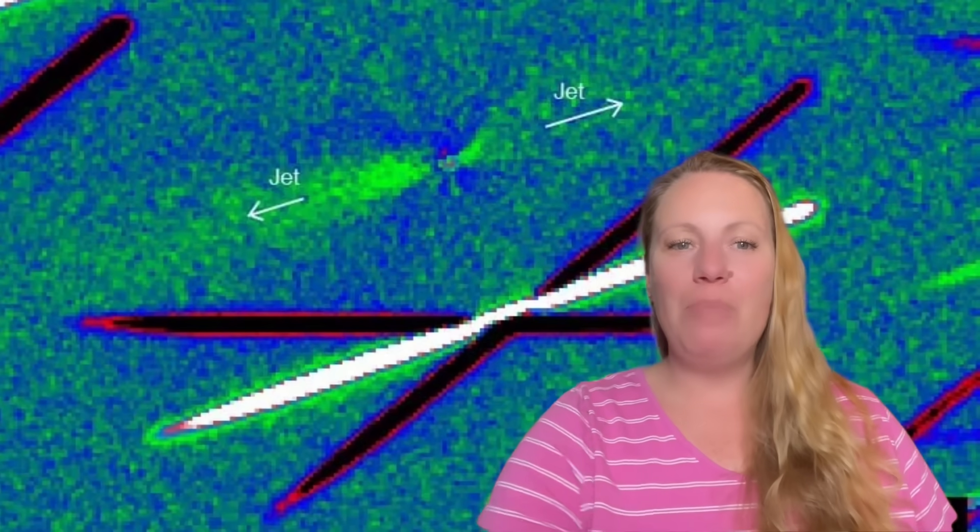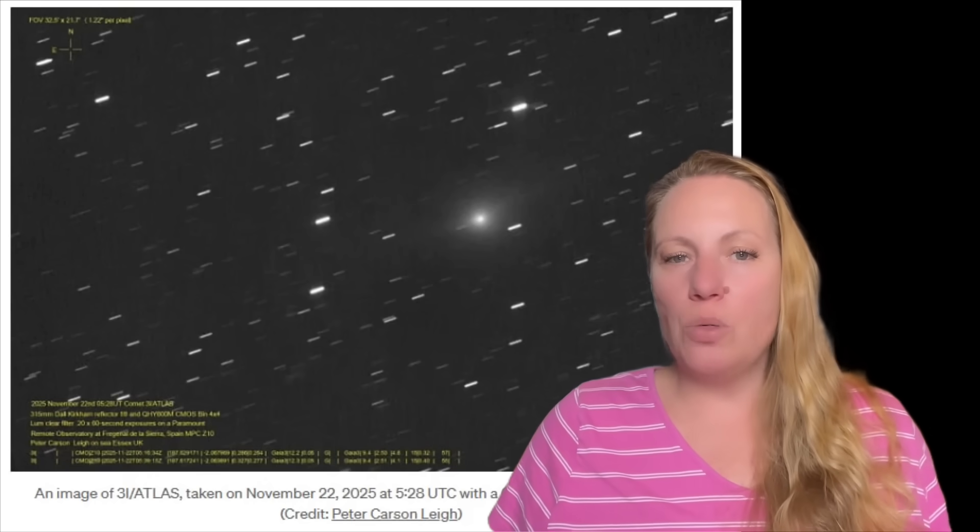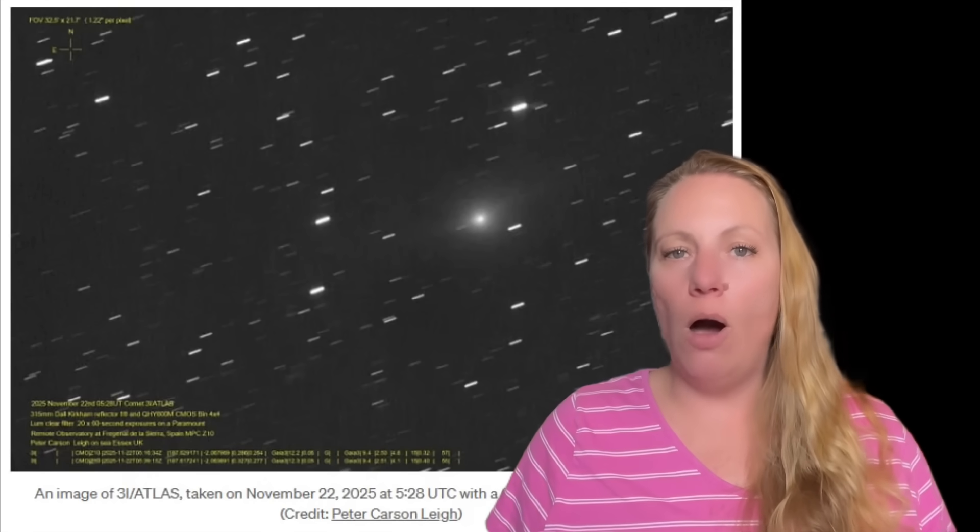Maybe other star systems create the same kinds of icy bodies that we do. And that's, again, huge. That's huge. Space breaking. Comet breaking.